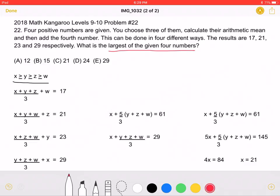The problem tells us that the results are 17, 21, 23, and 29. We will get the 17, the smallest number, when we have added the smallest number, being W, as the fourth number.